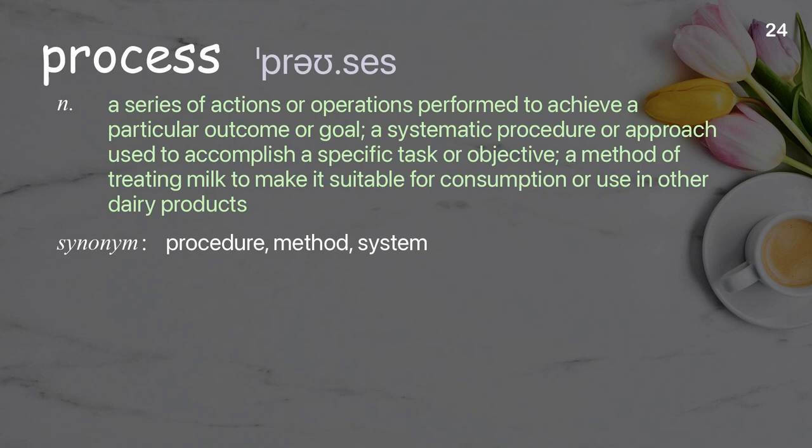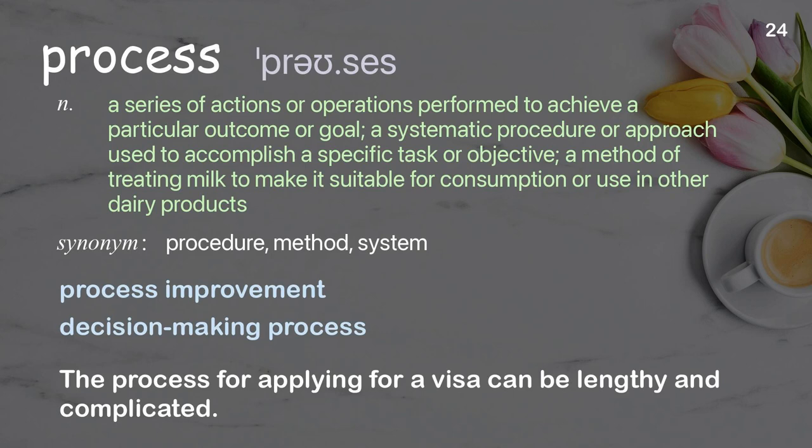Process: a series of actions or operations performed to achieve a particular outcome or goal; a systematic procedure or approach used to accomplish a specific task or objective; a method of treating milk to make it suitable for consumption. Examples: process improvement, decision-making process. The process for applying for a visa can be lengthy and complicated.